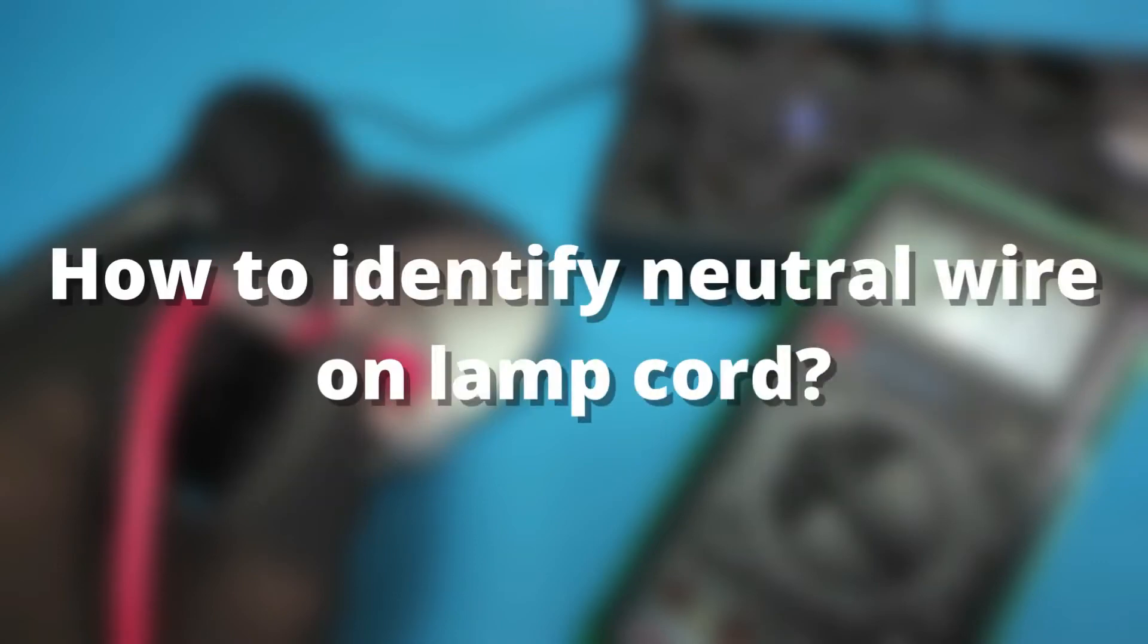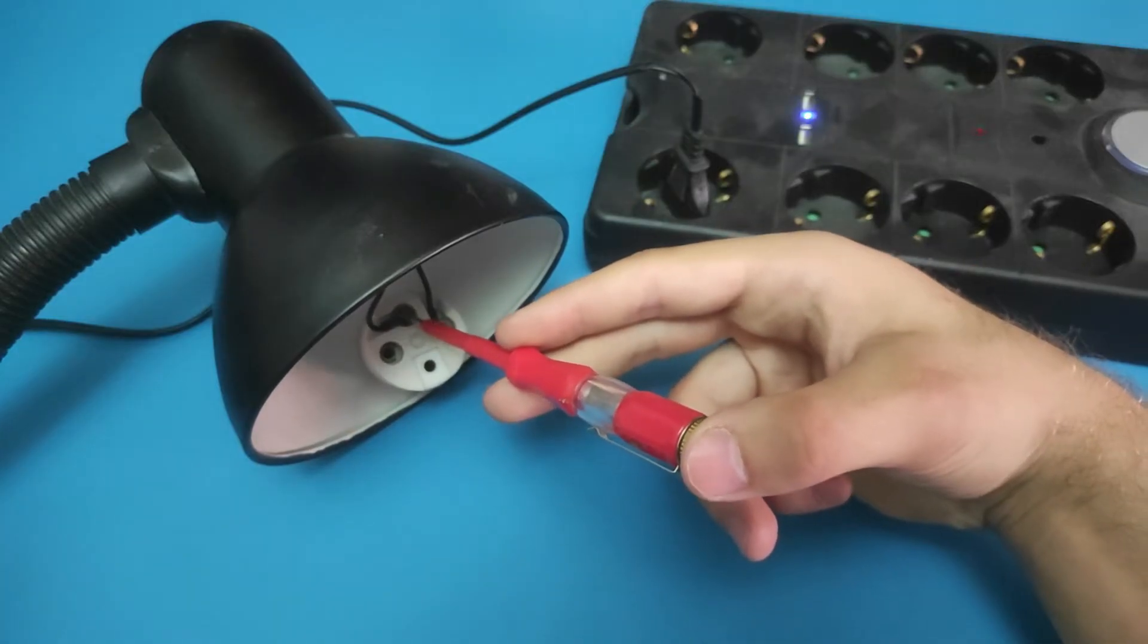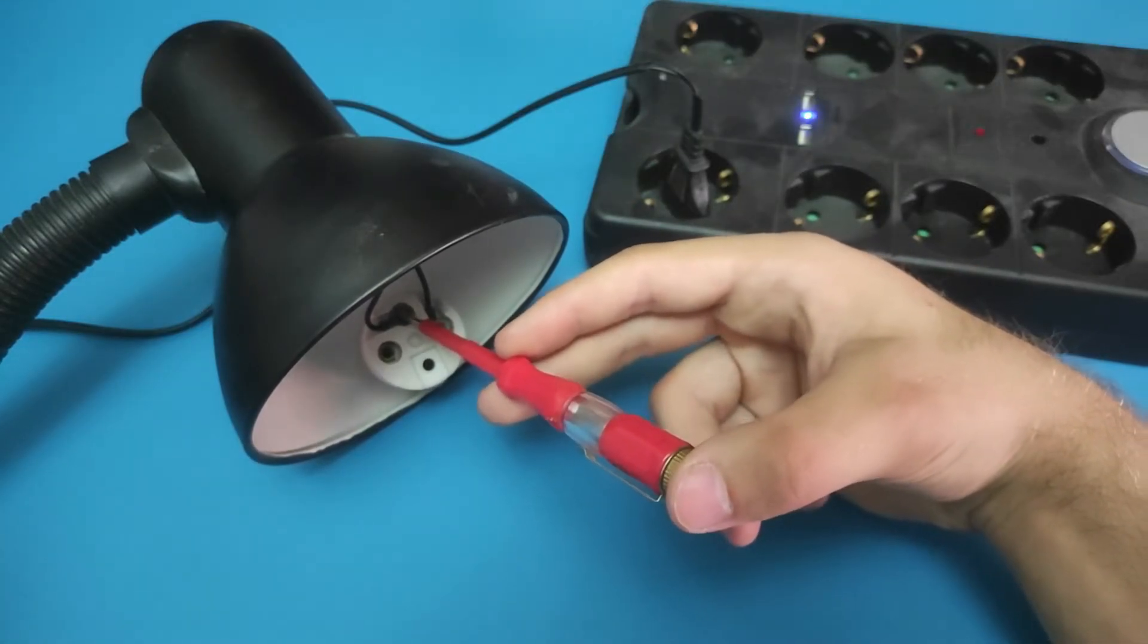Now let's see how to identify the neutral wire on lamp cord. The process is similar to before, except that you should get the opposite results.